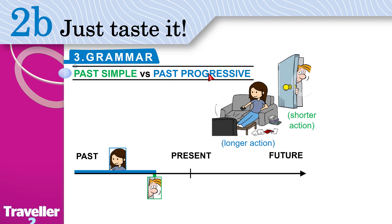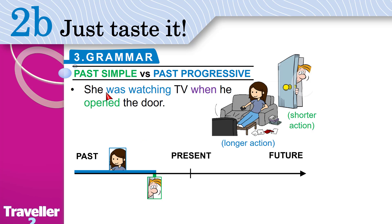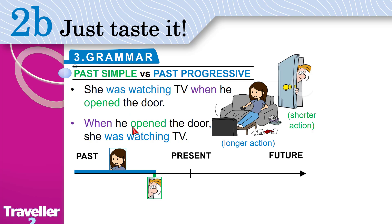We give past progressive to the longer action and past simple to the shorter action. We say: 'She was watching TV when he opened the door,' or 'When he opened the door, she was watching TV.' The meaning is the same. This is the time clause. If you start with 'when,' you need to put a comma — that is the only difference.